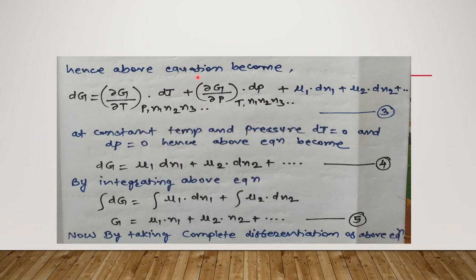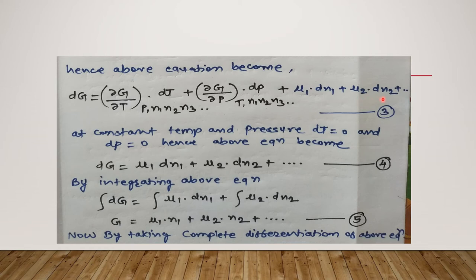Hence the above equation becomes: dG = (∂G/∂T)·dT at constant pressure N1, N2, N3, plus (∂G/∂P)·dP when temperature and number of moles remain constant, plus μ1·dN1 plus μ2·dN2, and so on. This is equation number 3.